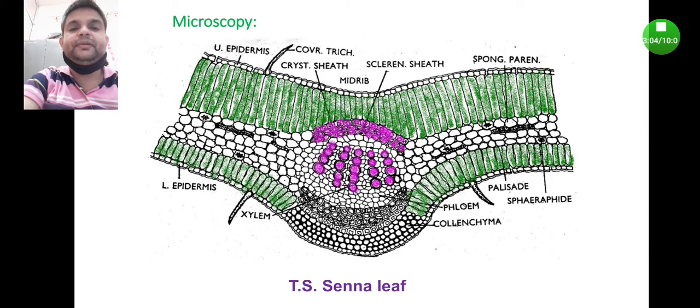Now if we divide this section from the middle, you can find from the bottom exactly the mirror image of what I have just explained. Upper epidermis, then the trichomes, then palisade parenchyma, spongy parenchyma.